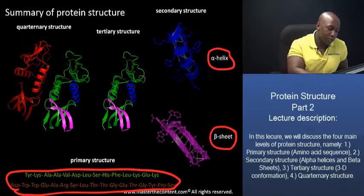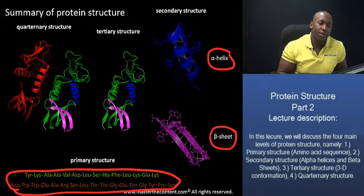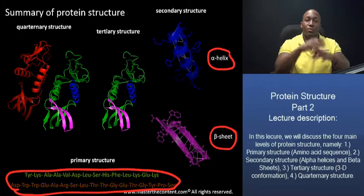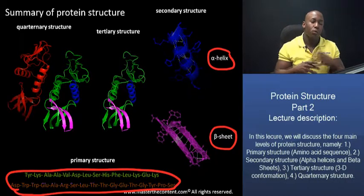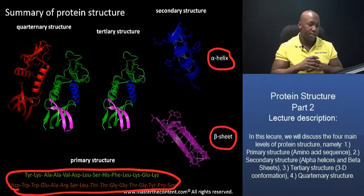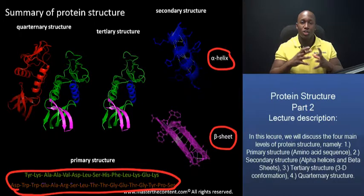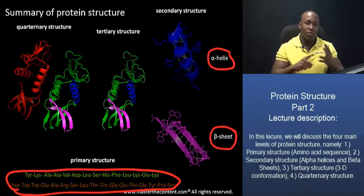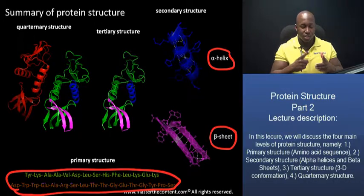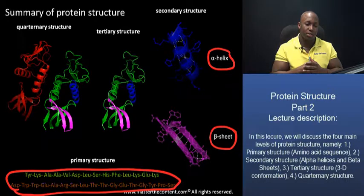At the tertiary level of organization, which refers to the three-dimensional conformation, we have quite a different number of forces coming together to contribute to the overall shape or geometry of a protein structure. So we have hydrogen bonds, ionic bonds, disulfide bridges or disulfide bonds, and also hydrophobic and hydrophilic interactions contributing to that level of structure.